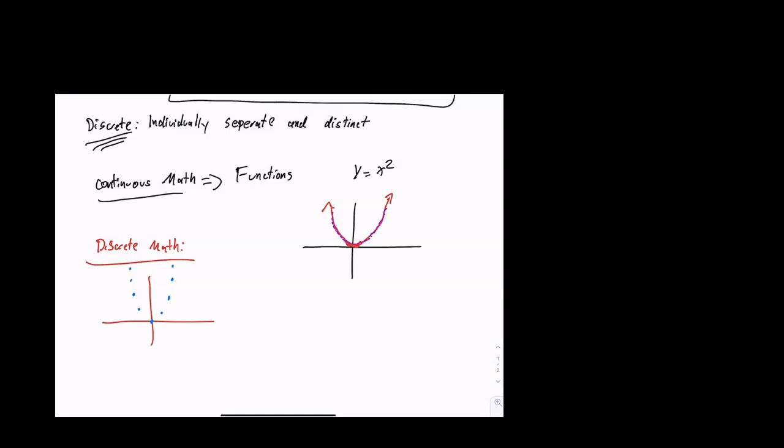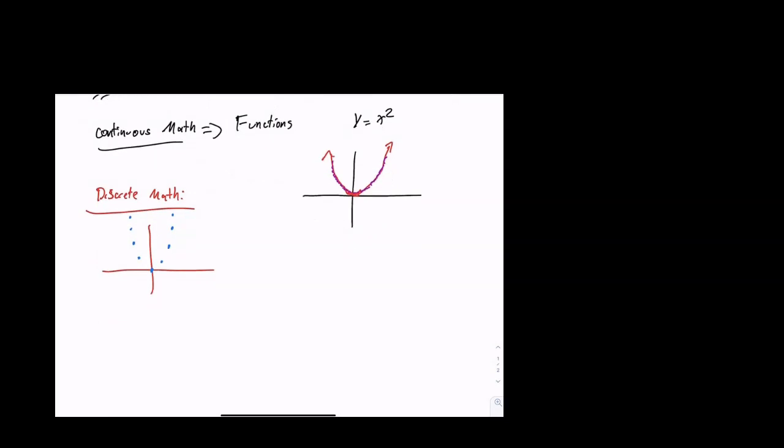Now, any value in between these points doesn't exist. So the values that we're looking at in the math can only be those specific values. So while this, you know, with this other graph, you can, we would say, I'm here.